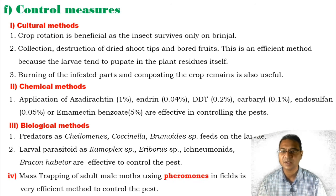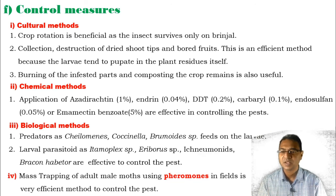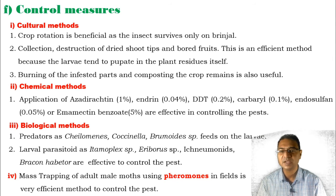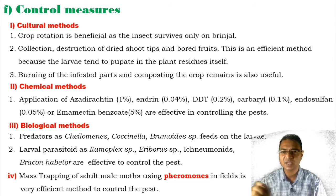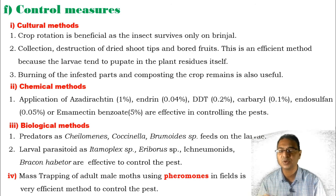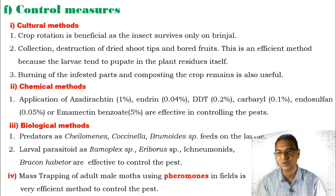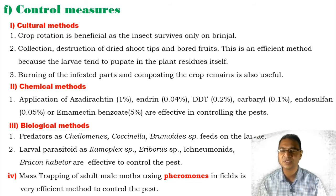The next method is pheromone traps. Mass trapping of adult male moths using pheromones in the infested field is a very efficient method to control the pest. This completes the topic, especially the pest of the brinjal, Leucinodes orbonalis. Thank you.